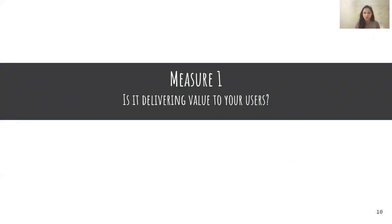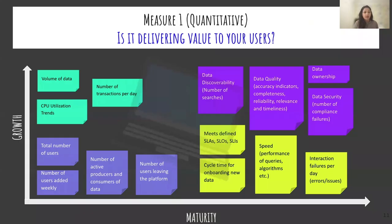Let's begin with Measure One. As I said, each measure has been divided into quantitative and qualitative measures. I have organized the quantitative measures into two different stages of a product life cycle: growth and maturity. Depending on where your product is, you can pick and apply these measures.